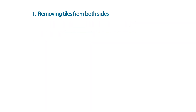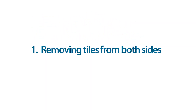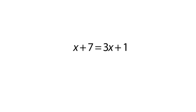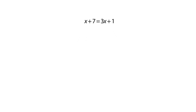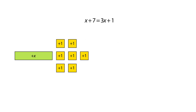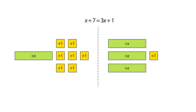First, an equation that shows how we can remove tiles from both sides. The equation x plus 7 equals 3x plus 1 has positive x terms and positive number terms on both sides. We can use the tiles to represent the equation, separating the two sides with a line. It might be helpful to put an equals sign on the line too.